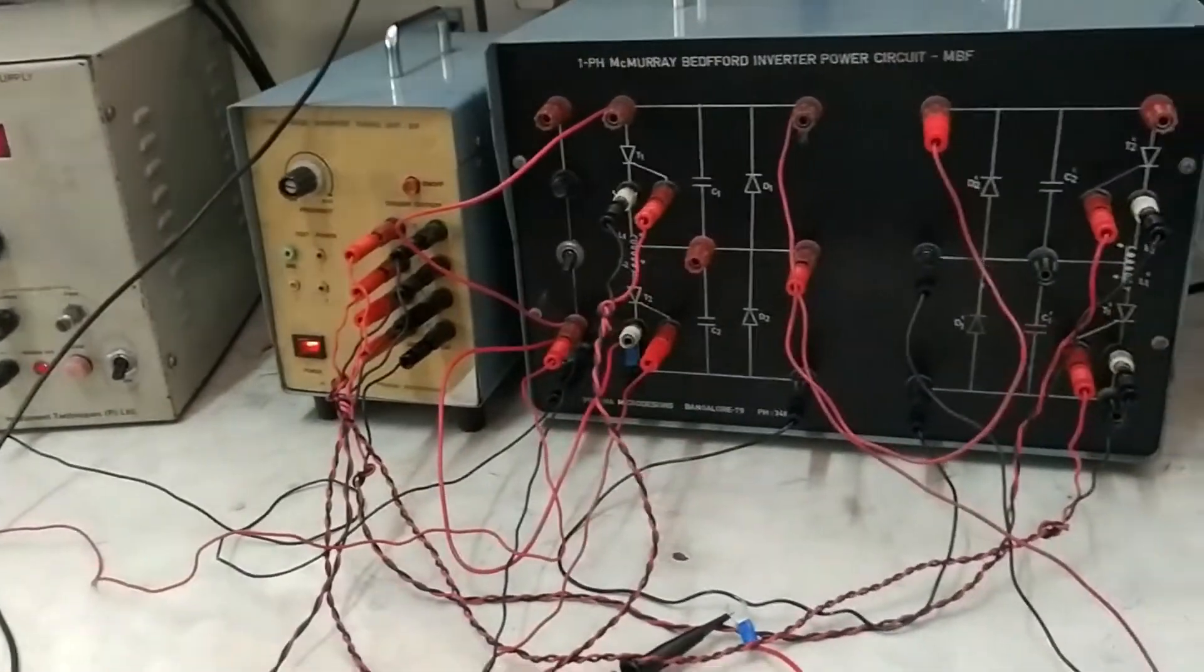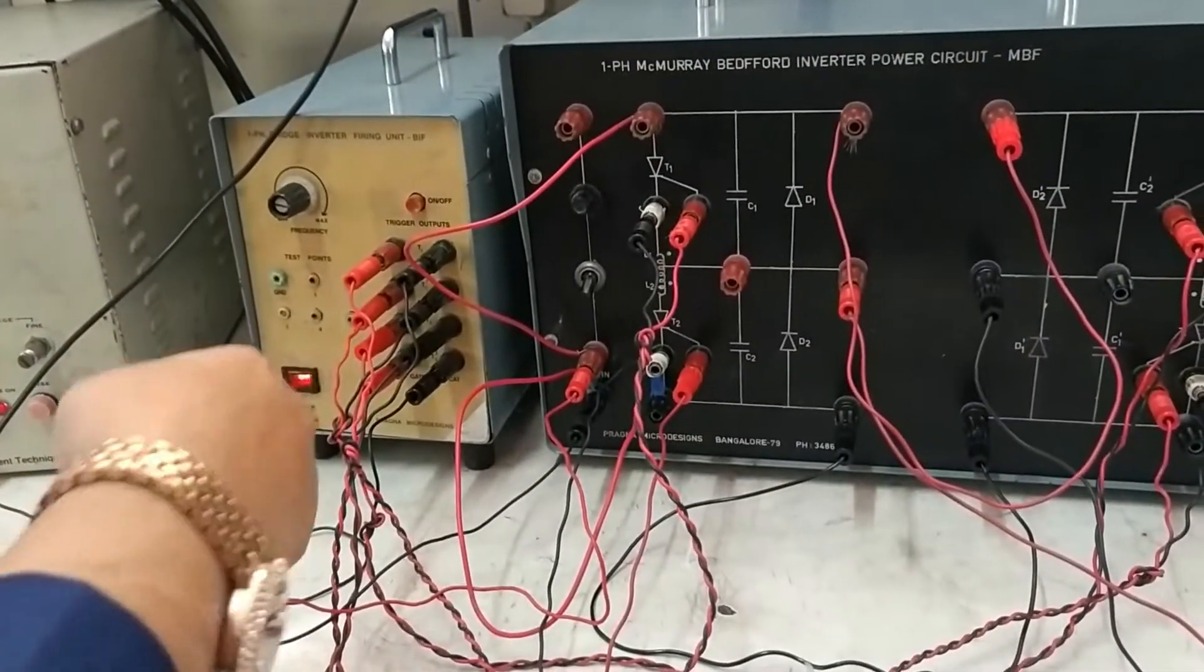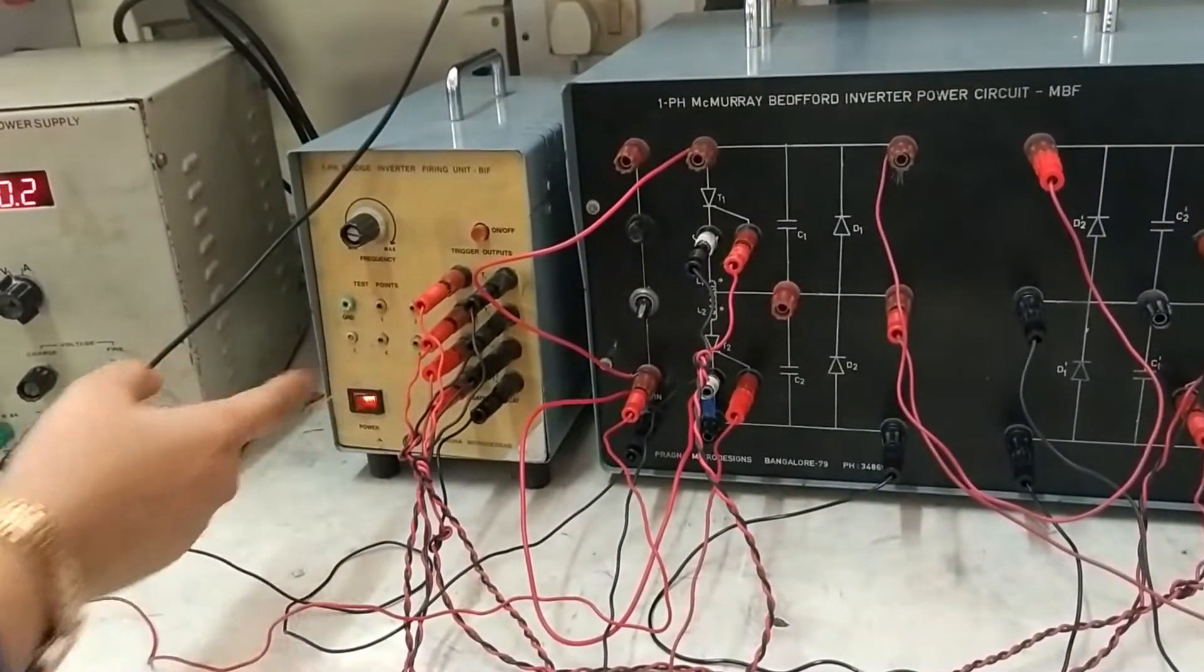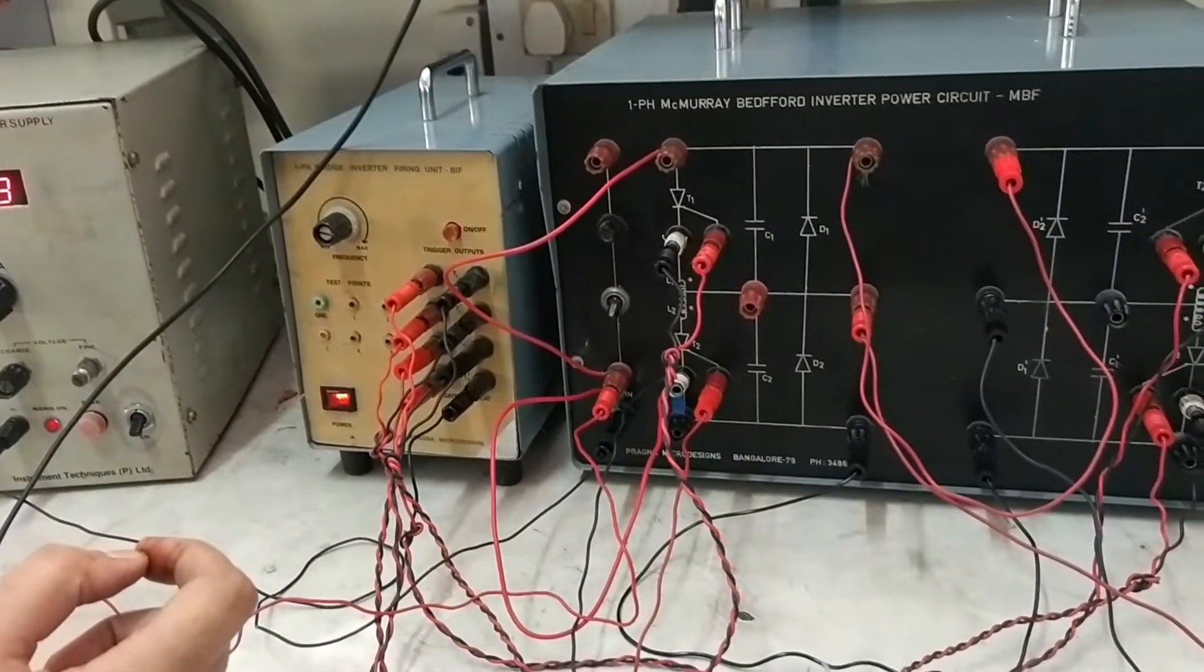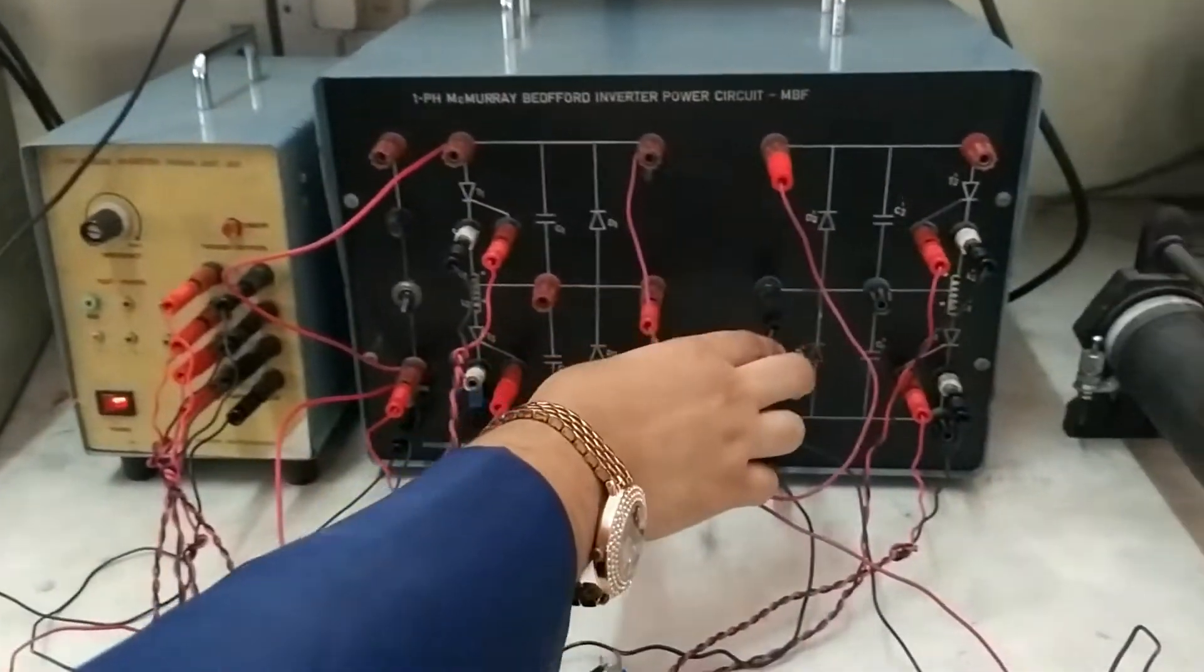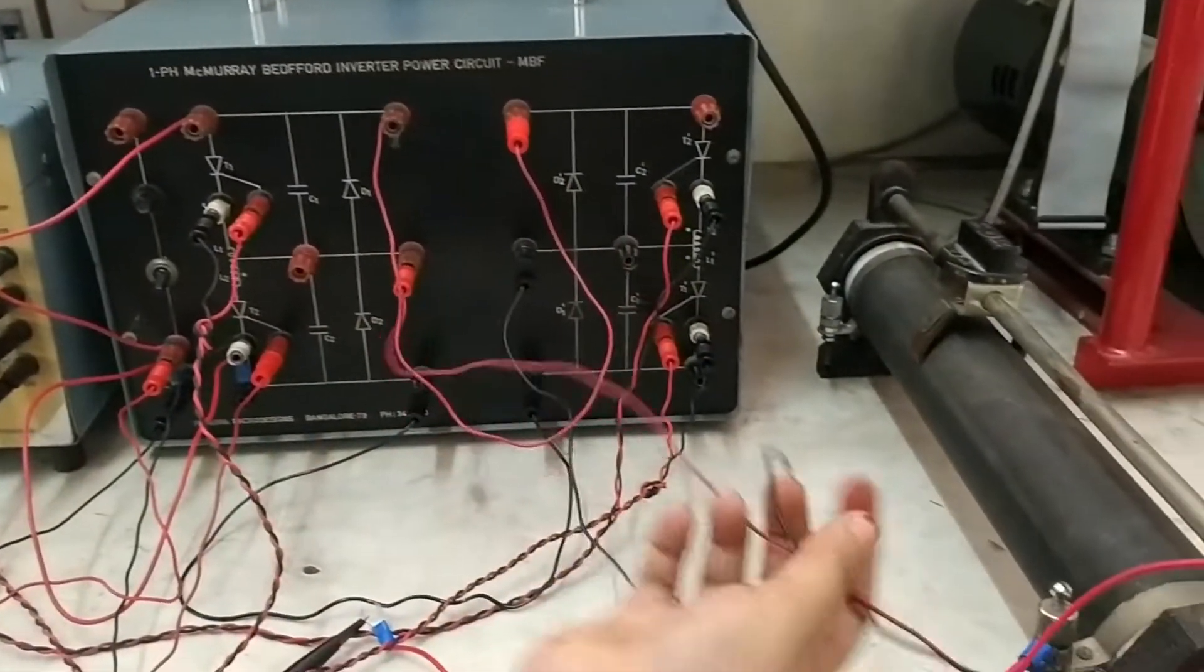Now apply firing pulses from the firing circuit to the power by pressing switch turn on. And then observe the waveform across the load. So you can observe the waveform across the load, that is the resistive load.